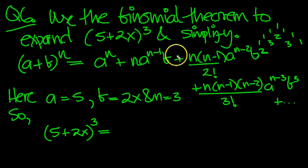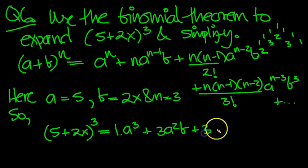So we know that these values will give 1 times a cubed, plus 3 - n is 3 - times a squared b. This one will be 3 again because you'll have 3 times 2 over 2, which is 3. And that'll be a, because 3 minus 2 is 1, so that's a to the 1 times b squared.